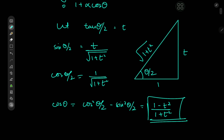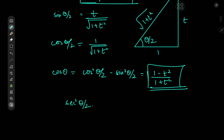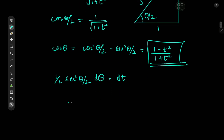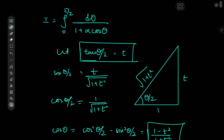Now for the differential element: differentiating gives sec²(θ/2) · (1/2) dθ = dt, so dθ = 2cos²(θ/2) dt = 2dt/(1+t²). The limits are easy: as θ → 0, t → tan(0) = 0; as θ → π/2, t → tan(π/4) = 1.